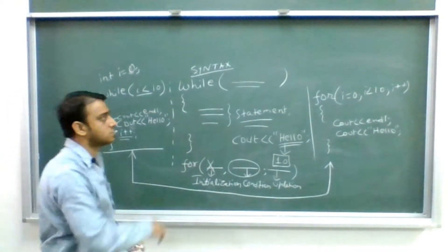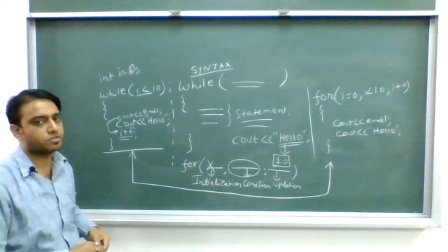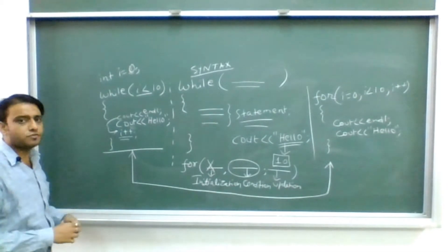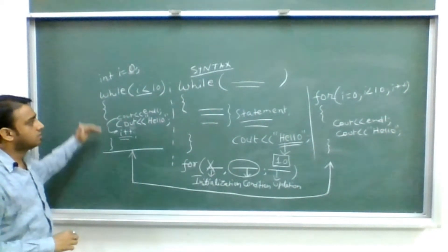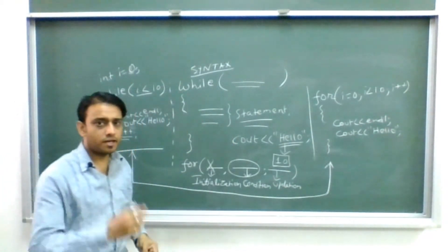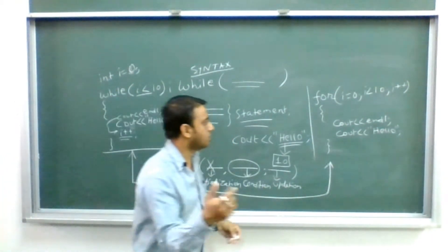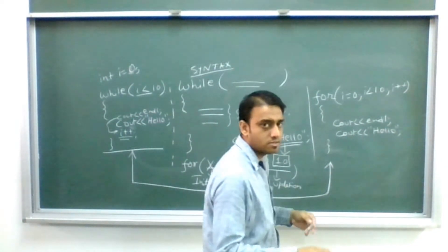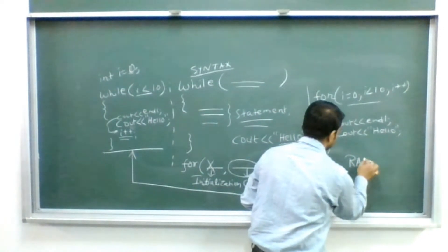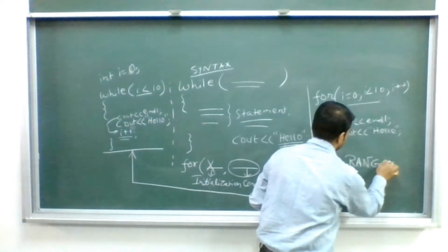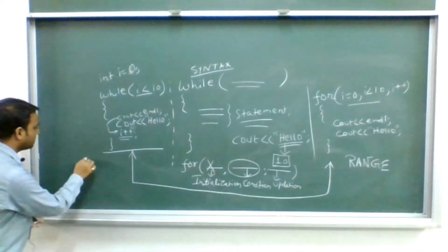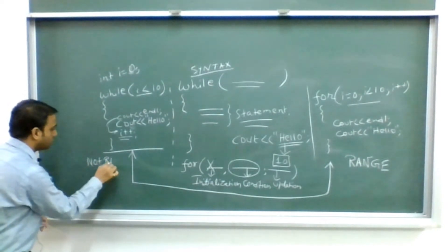This is the syntactical difference. Now, technically, if you look at the for loop versus while loop, the for loop is range-oriented, whereas the while loop is not range-oriented.